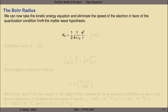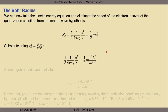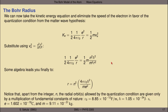Finally, we can take the kinetic energy equation and eliminate the speed of the electron in favor of the quantization condition from the matter wave hypothesis. Here's our kinetic energy for the electron in orbit around a proton, related to the generic kinetic energy ½mv². We have an expression for v² from the quantization condition: n²h-bar² over m²r². Substituting that into the equation, we find that the kinetic energy from Coulomb's law equals the kinetic energy expression taking into account the quantization of the wave function. Some algebra leads to this expression for the allowed radii of an atom: the allowed orbital radius in this 2D model is simply given by the integer n squared times a product of fundamental constants of nature.